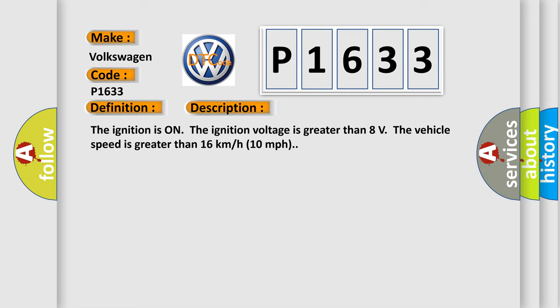The ignition is on, the ignition voltage is greater than 8 volts. The vehicle speed is greater than 16 kilometers per hour, 10 miles per hour.